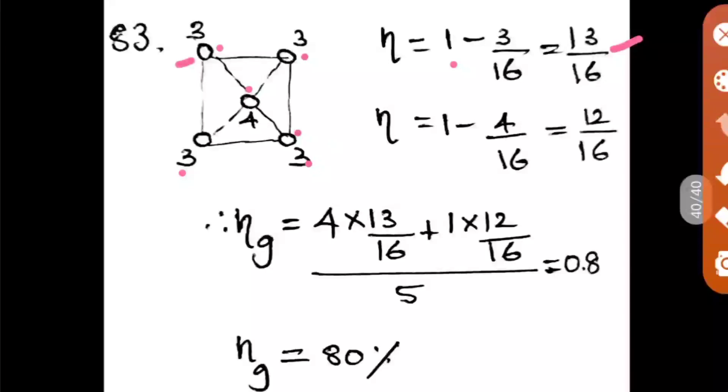Now we can find for the center pile. Center pile is having 4 numbers of pile adjacent, so it is 1 minus 4/16, you get 12/16. Now we can find the efficiency for the group: 4 × 13/16 + 1 × 12/16 divided by the whole number 5, you will get 0.8, so 80 percent is your efficiency. Option A is the right answer.